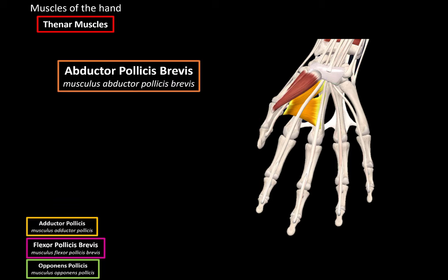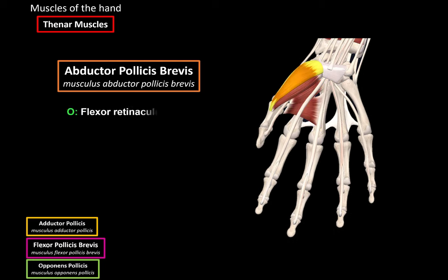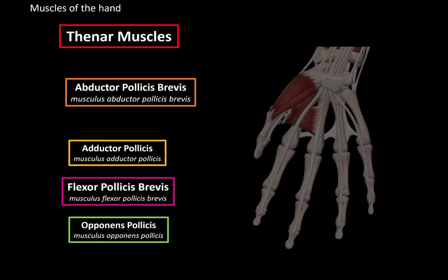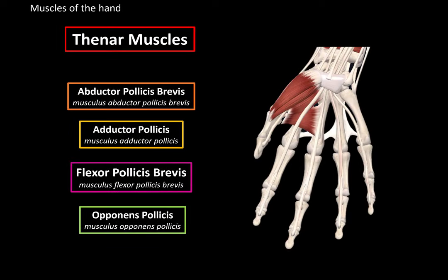The last thenar muscle is the Abductor Pollicis Brevis, which originates from the Flexor Retinaculum and inserts at the base of the proximal phalanx of the thumb. Its function — as the name says — is abduction of the thumb. And that was all the muscles of the thenar region.